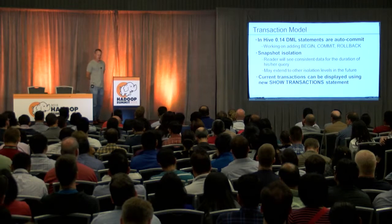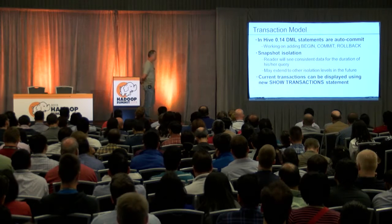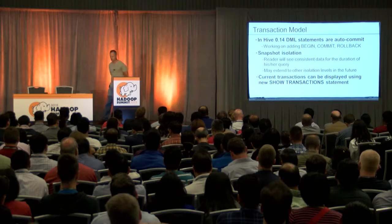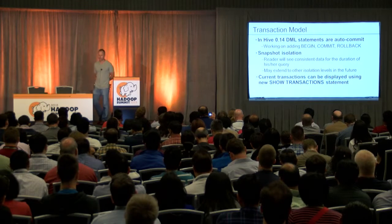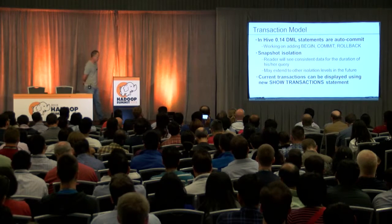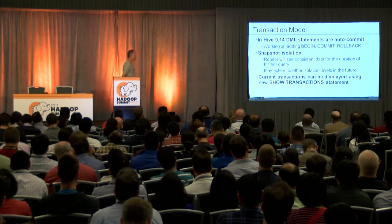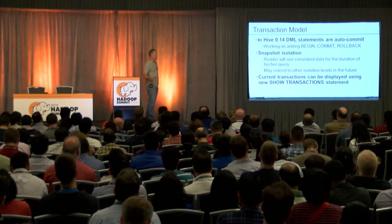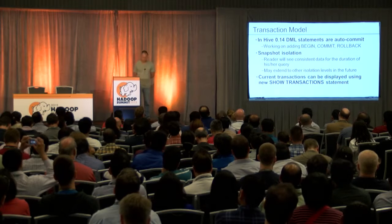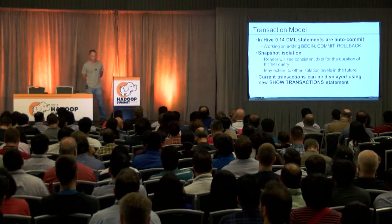When a reader or writer wants to start a transaction, they go to the Metastore and say, I want to open a transaction, here are the files I need to lock. What is our transaction model? In the initial release in Hive 0.14, everything is auto-commit — there's not yet a BEGIN or START followed by COMMIT/ROLLBACK. Those aren't in the language yet. The isolation level is snapshot, meaning you will see a consistent set of data for the duration of your query. We also added a SHOW TRANSACTIONS command.